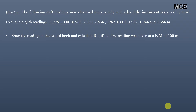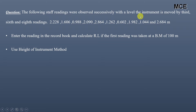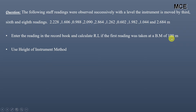Welcome back to Master Civil Engineering. In this video we will learn how to use the height of instrument method to find the reduced levels of various points. We have been given a question which states that the following staff readings were observed successively with a level. The instrument is moved at the third, sixth, and eighth readings. We have 10 staff readings, and we have to calculate the reduced level. The first reading was taken at a benchmark of 100 meters, and we will use the height of instrument method.